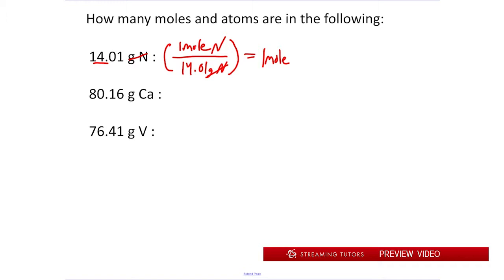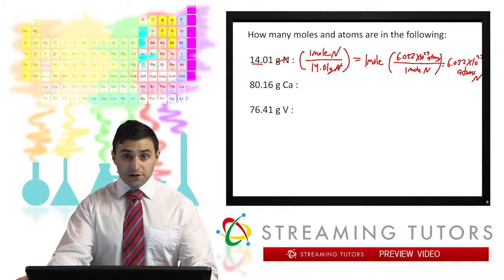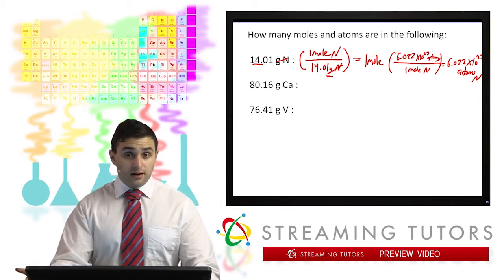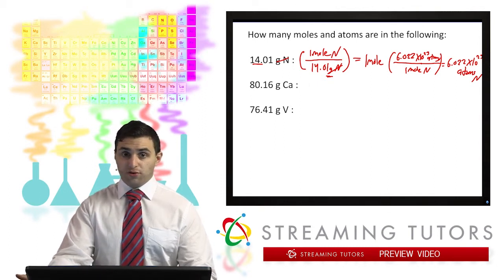Next, we can convert that into how many atoms there are. We say that there are 6.022 times 10 to the 23rd atoms in every one mole of nitrogen. So that gives us simply 6.022 times 10 to the 23rd atoms of nitrogen. That's a nice, easy, foolproof way to convert. Using this fraction makes sure that our units are canceling out correctly, ensuring we're not multiplying when we should be dividing or vice versa. You can use this for any kind of conversion — grams to moles, moles to grams, and so on.